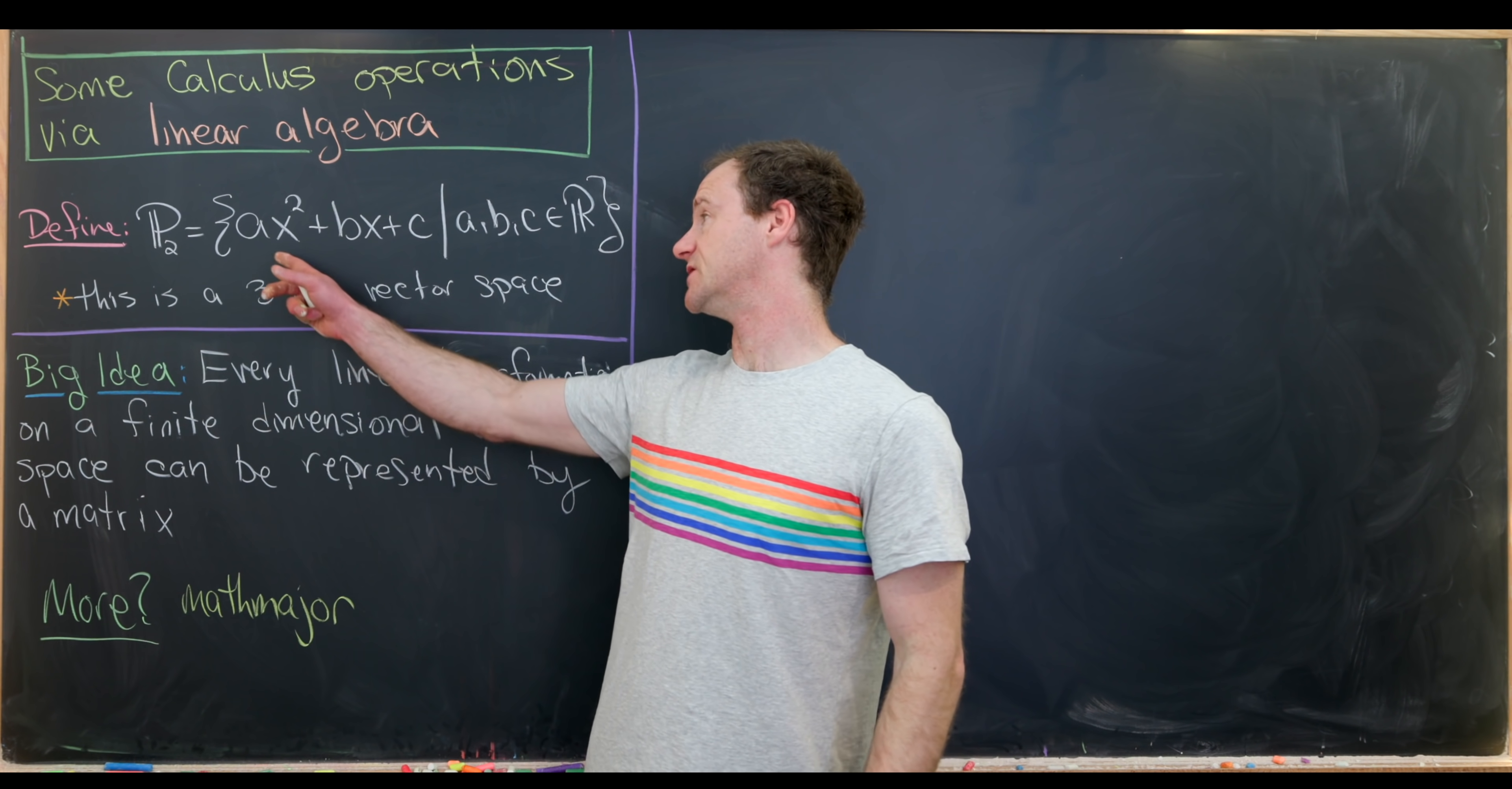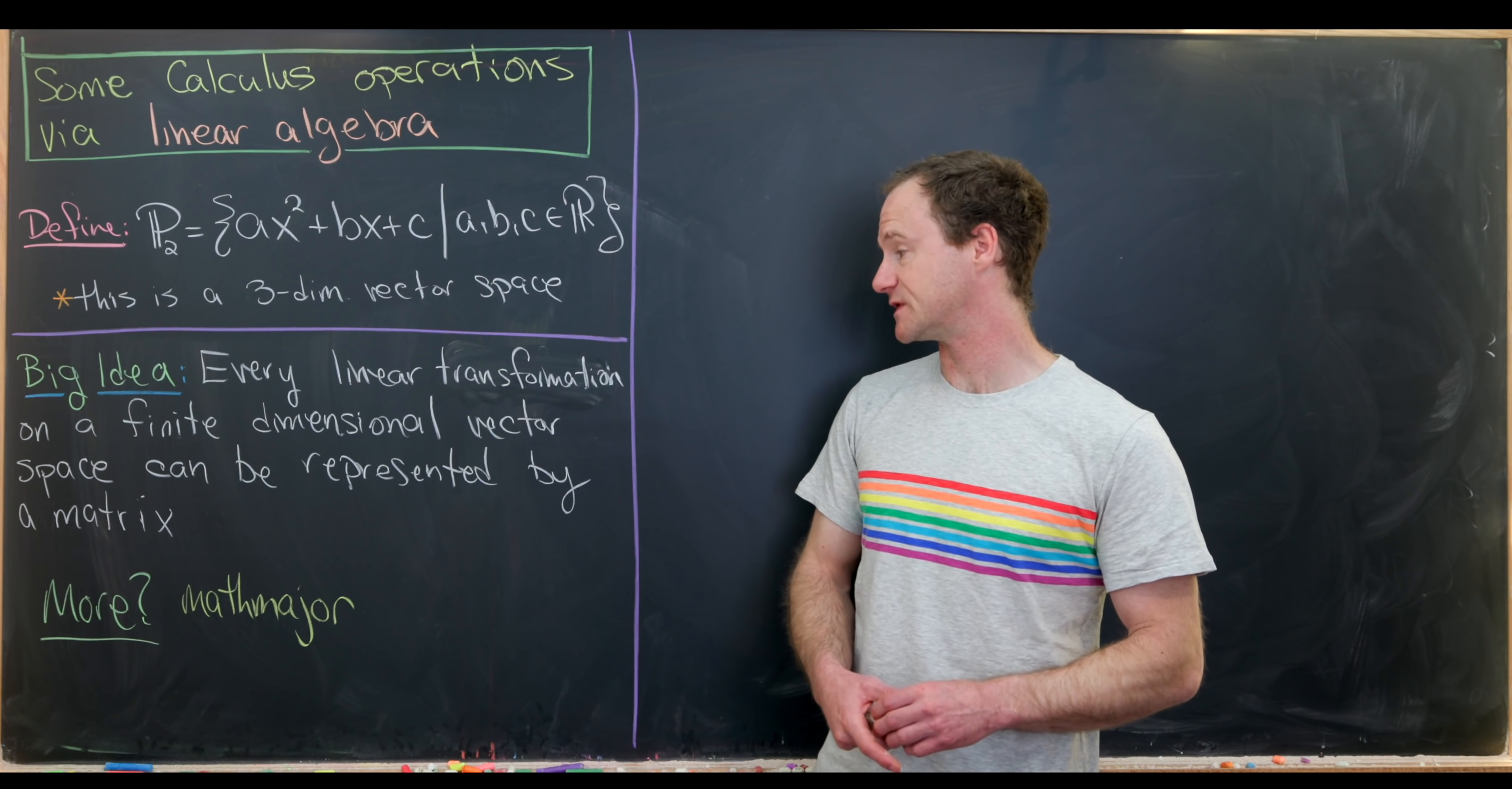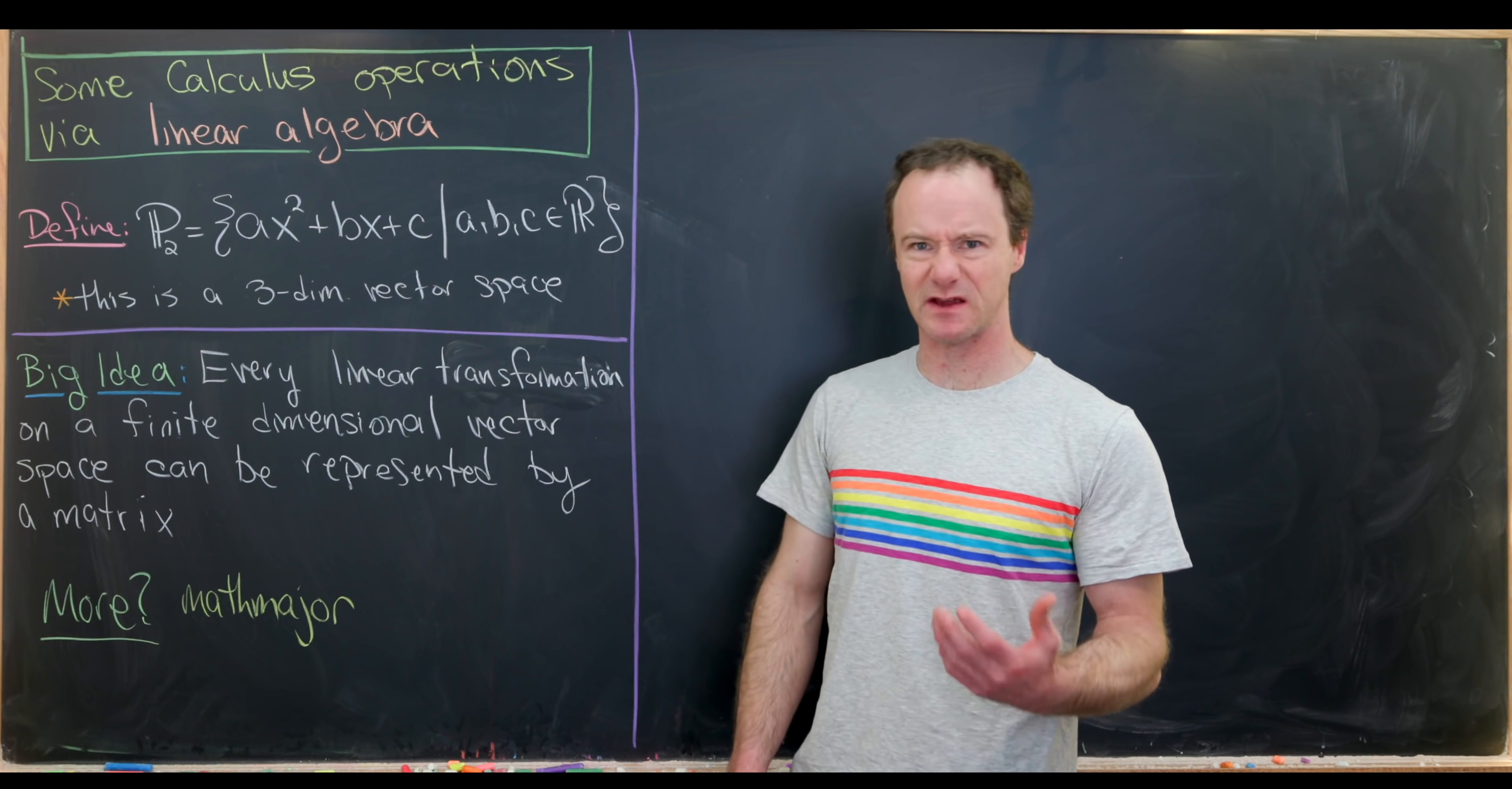We can write those in general as ax squared plus bx plus c, where a, b, and c are over R. So we're working over the real numbers here. The big idea behind this whole video is that every linear transformation on a finite dimensional vector space can be represented by a matrix. Before we get started, I'd like to point out I've got a second channel called Math Major, where I go over in-depth full courses that you would see as an undergraduate studying mathematics. I've got a whole course of linear algebra that's being built right now.